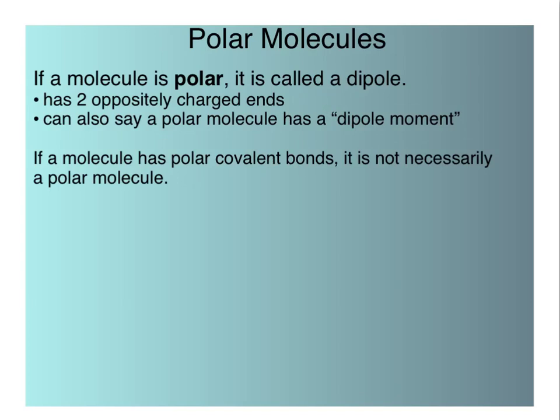Polar molecules are dipoles. That means they have two oppositely charged ends. One end of the molecule is a little bit more negative, and the other is a little bit more positive. You can also say that polar molecules have a dipole moment.